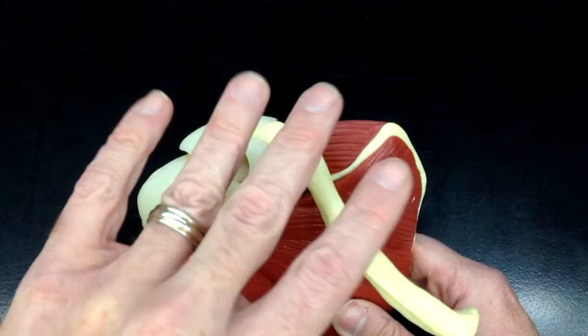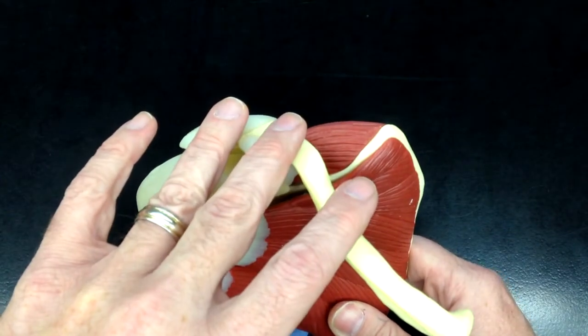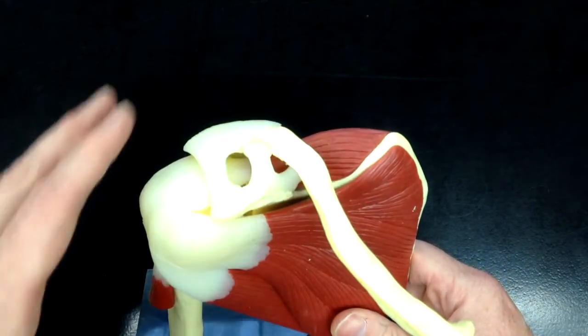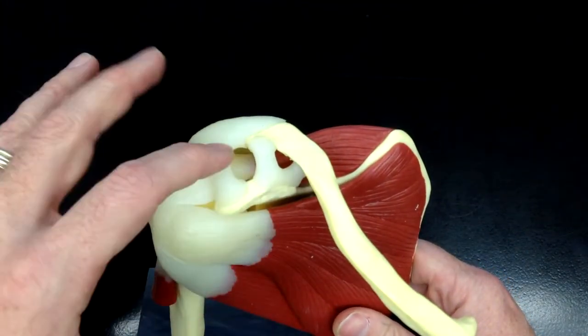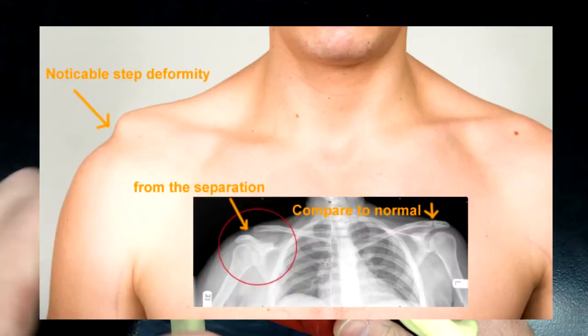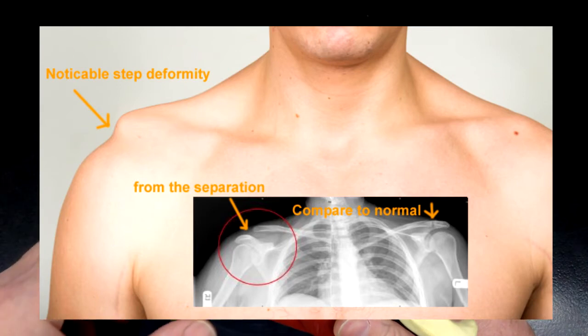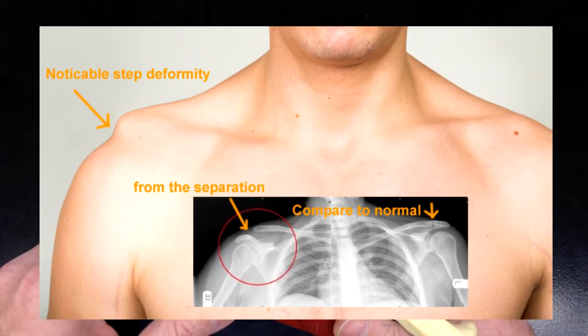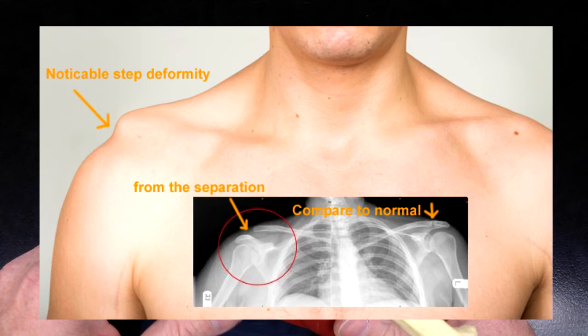Those ligaments hold the clavicle down. When they get torn, the clavicle is going to come up and you'd be able to see that deformity on someone who has a separated shoulder.